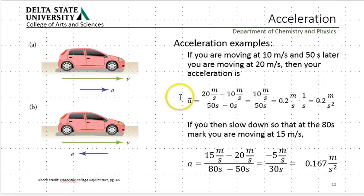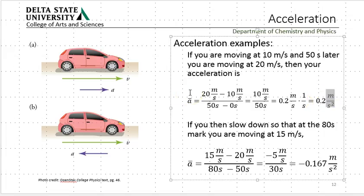Acceleration examples. Pretty straightforward, right? If we're going 10 meters per second, and then 50 seconds later, we're going 20 meters per second. Then it's our final velocity minus our initial velocity divided by our final time minus our initial time. And this ends up being 0.2 meters per second squared. Now, note, the units for acceleration are meters per second squared.